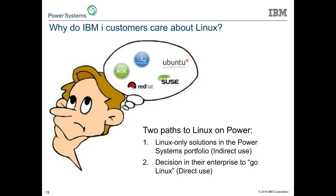Most of you are IBM i customers. You're likely going to get to Linux one of two ways: through indirect use — you didn't really pick Linux, you got it as part of a solution — or through direct use, where you made an explicit decision to go Linux. Let's start with the indirect route: how might you get to Linux in a rather indirect fashion?